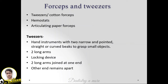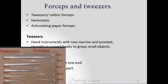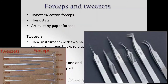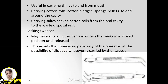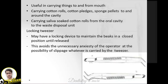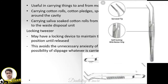Next we have forceps and tweezers. We have cotton forceps, hemostats, and articulating paper forceps. Tweezers are hand instruments with two narrow and pointed straight or curved beaks to grasp small objects. They are joined at one end with a locking device, helping to carry things to and from the mouth — carrying cotton rolls, sponge pellets, and removing cotton rolls from the oral cavity. The locking device maintains the beaks in a closed position to avoid slippage.